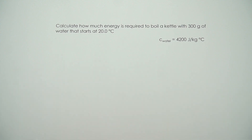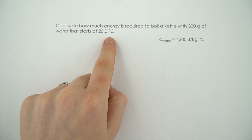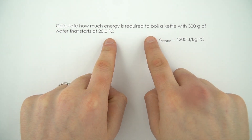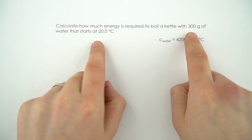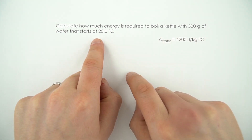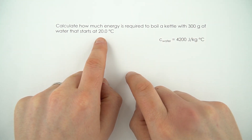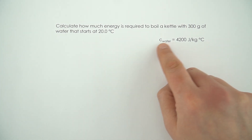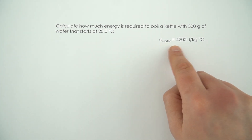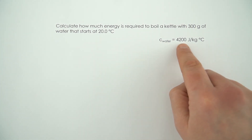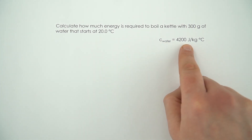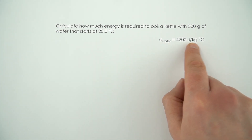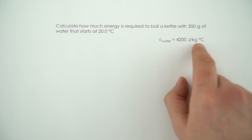In this question we need to work out how much energy is required to boil a kettle with 300 grams of water that starts at 20 degrees — so about room temperature. It says here that the specific heat capacity of water is 4200 joules per kilogram per degree celsius.